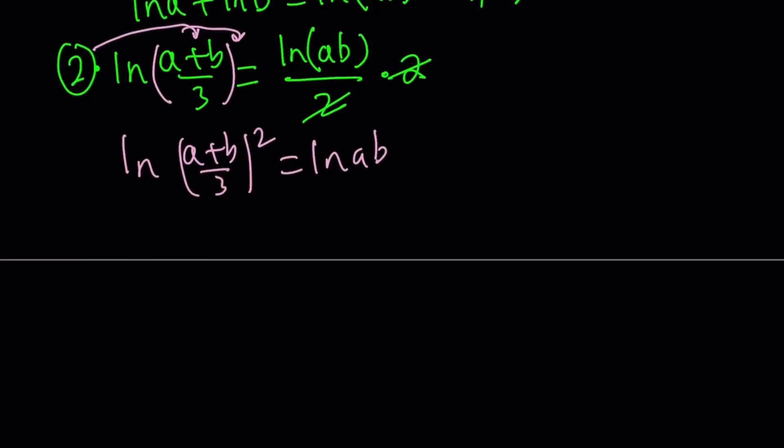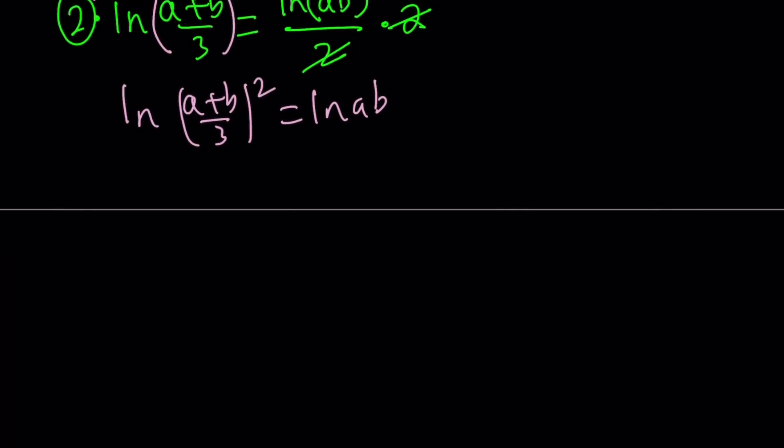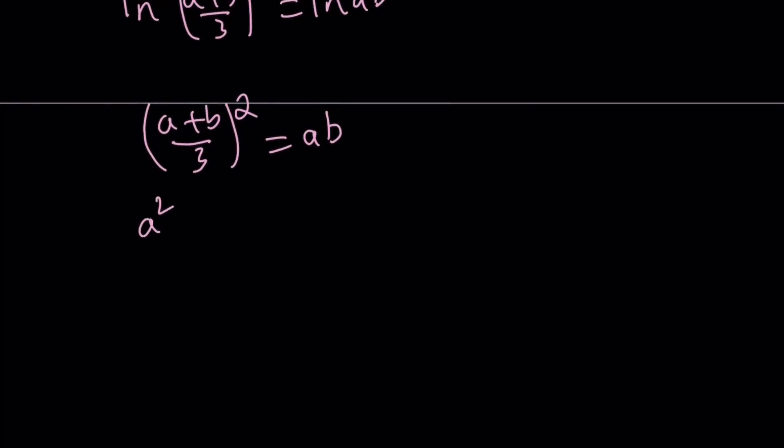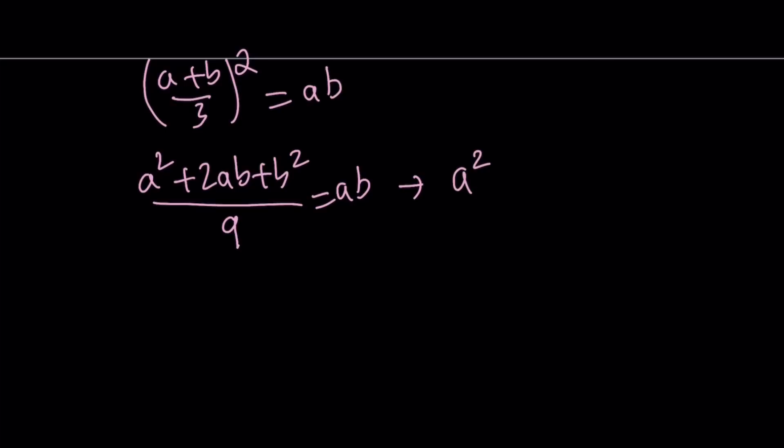So now we got ln's on both sides. This implies, since ln is a one-to-one function, this implies that ((a+b)/3)^2 = ab. And if you go ahead and expand the numerator and multiply the denominator by itself, you get (a^2 + 2ab + b^2)/9 = ab. And then if you do cross-multiplication, you're going to get a^2 + 2ab + b^2 = 9ab. Let's subtract 9ab from both sides. That way, we're going to get a quadratic: a^2 - 7ab + b^2 = 0.